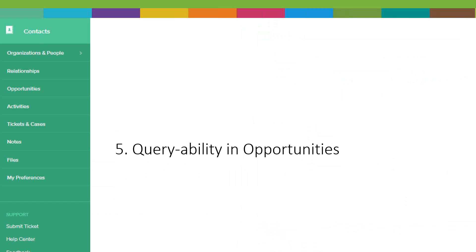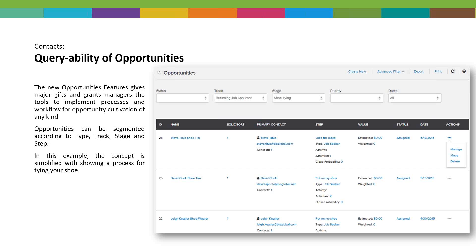The last great feature is queryability in Opportunities. Opportunities is a very new feature in Charity Engine and is really our version of moves management — something people have been asking for a long time. Opportunities gives major gifts, grants managers, and development people in general the tools to implement processes and workflows for opportunity cultivation of any kind. What makes it special is that it's completely configurable by you — we're not guiding you through a wizard or telling you how to do it; you build the processes you already have into how Charity Engine operates.